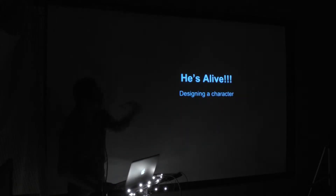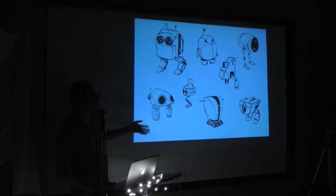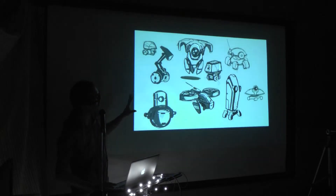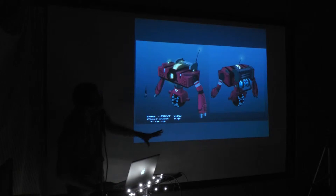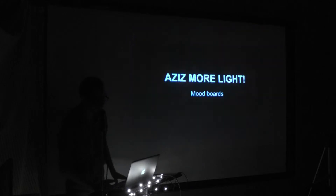Now we have to go into the character — he's alive. So we start designing the characters. We have some little robots; these are old designs. Based off the old designs, it doesn't really work anymore, so let's go with something more new. Here's where we arrive. This is a new character. He's named Theo. Long story behind that — talk about it later.